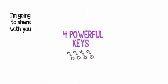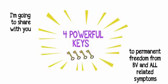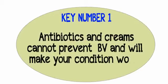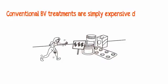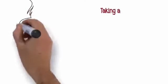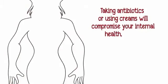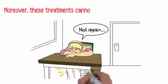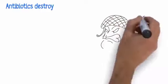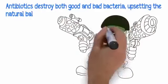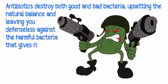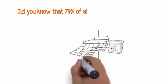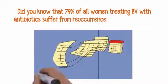I'm going to share with you four powerful keys to permanent freedom from BV and all related symptoms. Key number one: antibiotics and creams cannot prevent BV and will make your condition worse. Conventional BV treatments are simply expensive drugs that focus on alleviating the pain, itching, and discomfort. Taking antibiotics or using creams will compromise your internal health, disrupt your intestinal balance, and make your bacterial vaginosis worse in the long run. Moreover, these treatments cannot prevent future BV episodes. Antibiotics destroy both good and bad bacteria, upsetting the natural balance and leaving you defenseless against the harmful bacteria that gives rise to BV. This will result in increased discharge, itching, odor, and irritation. Did you know that 79% of all women treating BV with antibiotics suffer from reoccurrence within two to three months?